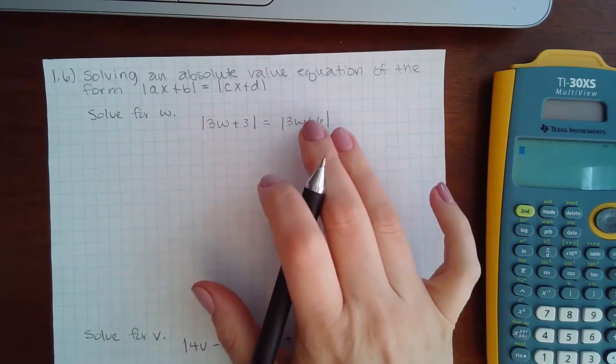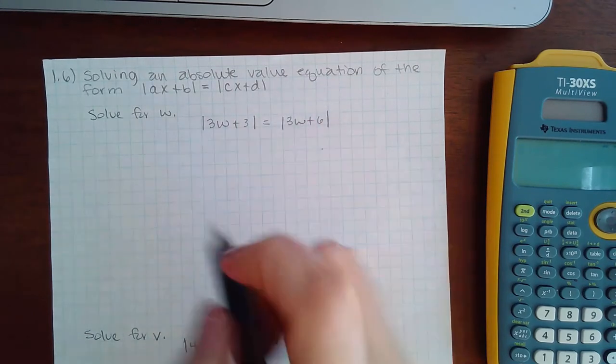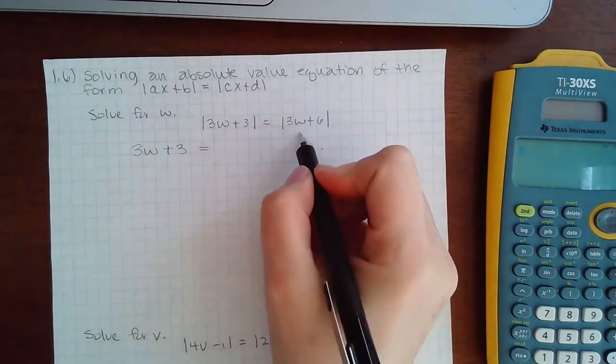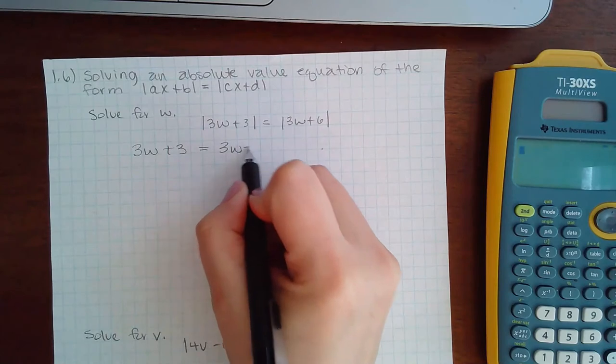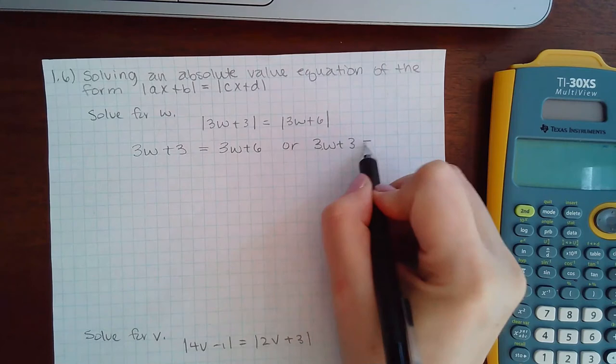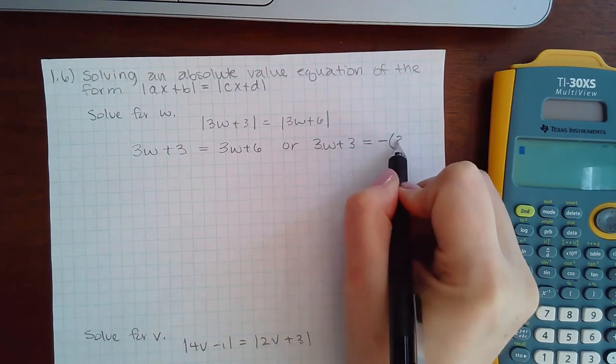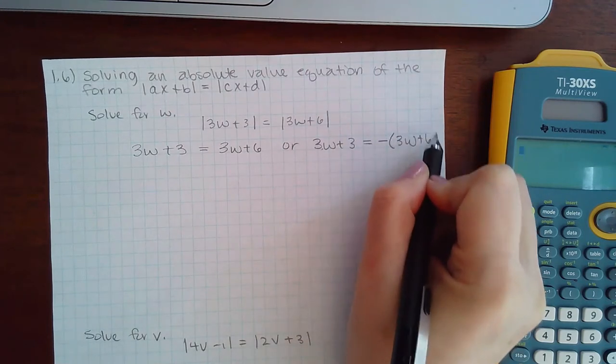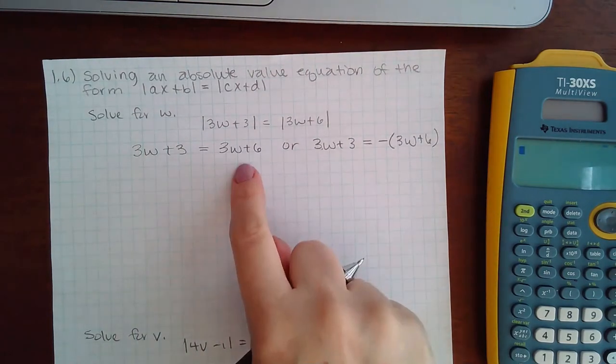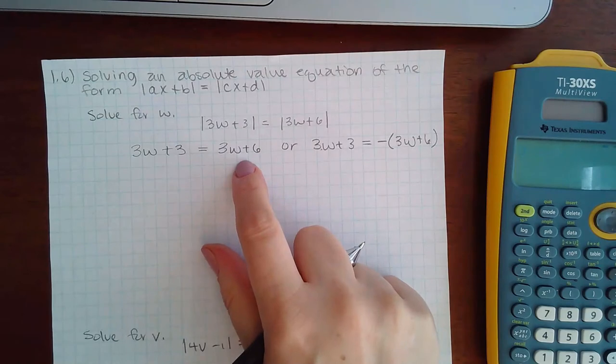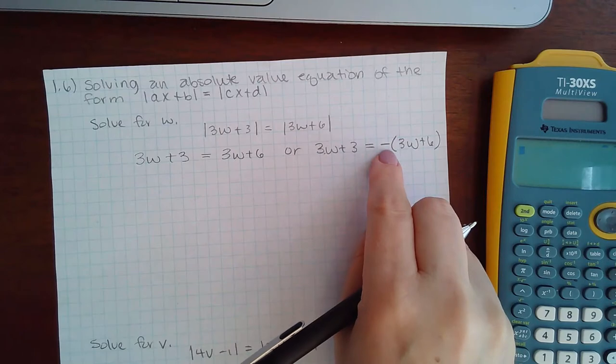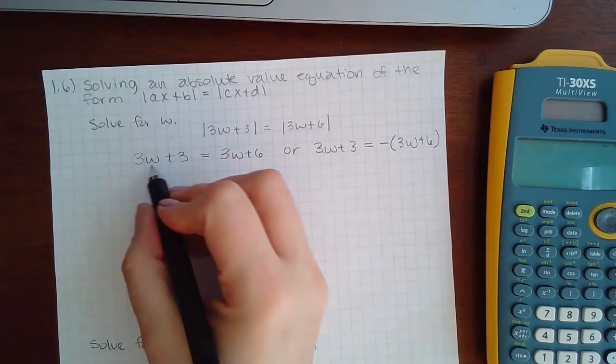So you take what is on the inside equal to exactly what is on the inside over here, or what is on the inside on the left equal to the negative of what is on the inside to the right. That's the difference here. You have to do the positive just as it is, and then this with the opposite signs, so a negative in the front.